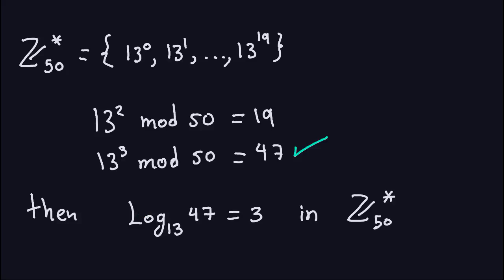The result is: log base 13 of 47 equals 3 in Z50*. It's very important to state which group you're working in, because if you change the group this computation will likely change. That's the discrete logarithm problem in Z_n* — we've expanded the definition to cover a slightly more general class of groups.